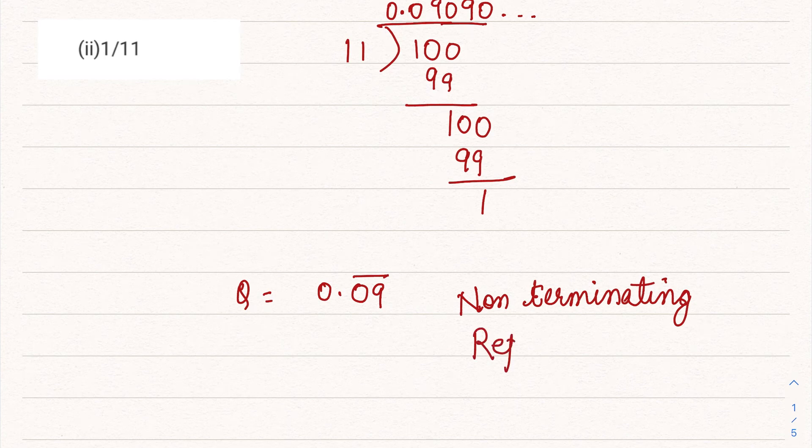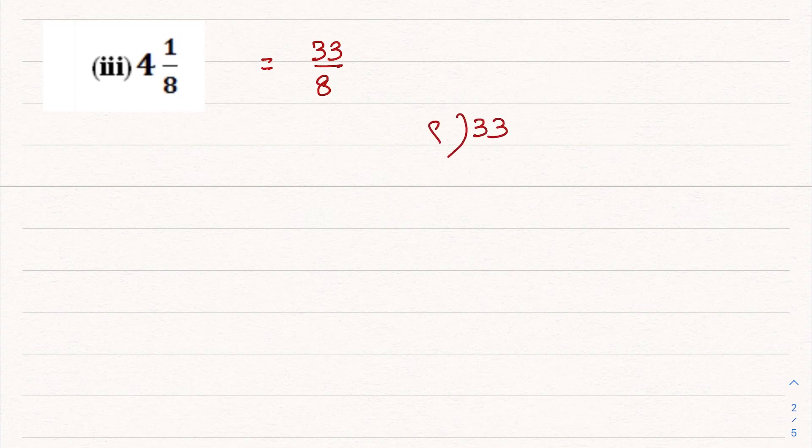Third part: 4 1/8. First, let's convert this mixed fraction to improper. 4 times 8 is 32, plus 1, so this is 33 by 8. Here we divide 33 by 8. 8 fours are 32, one is coming as the remainder, so we'll put a decimal and make it 10.